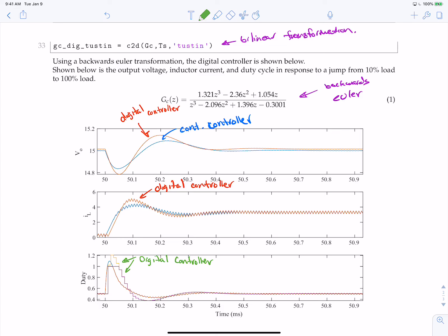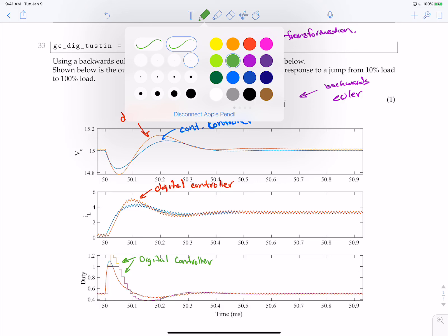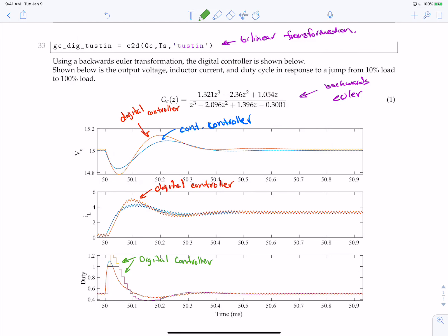So you can see in this case, definitely with the undershoot here, there's definitely a big difference. I would say 14.8, I don't know, approximately, and I'm just eyeballing this, 200 millivolt difference between the two.